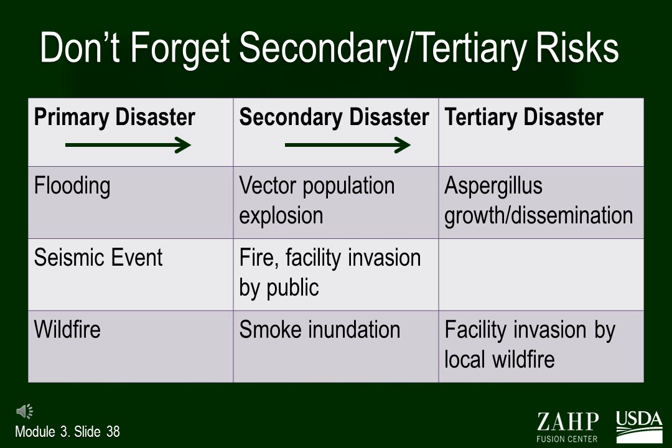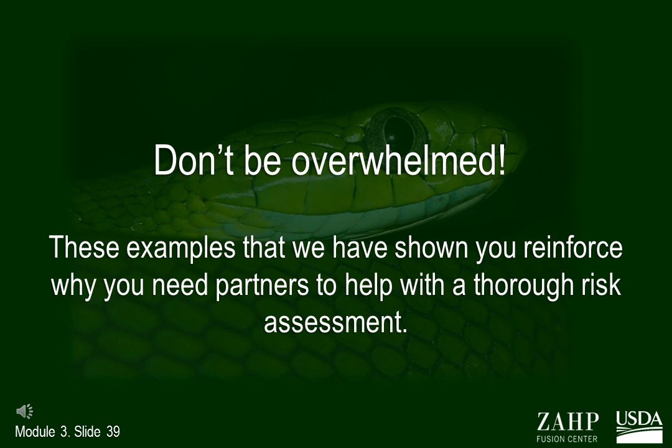Don't forget that one disaster may lead to another — a totally different type of event. Sometimes they're called cascading events, or they may be considered secondary or tertiary disasters. In flooding, vectors like mosquitoes may explode in population. You may also get wetness in buildings and aspergillus, a type of fungus that kills a lot of birds, may grow uncontrollably. Your partners are still your best source to get a jump and minimize your research time. Engage them in your risk assessment early and often — it'll save you work.